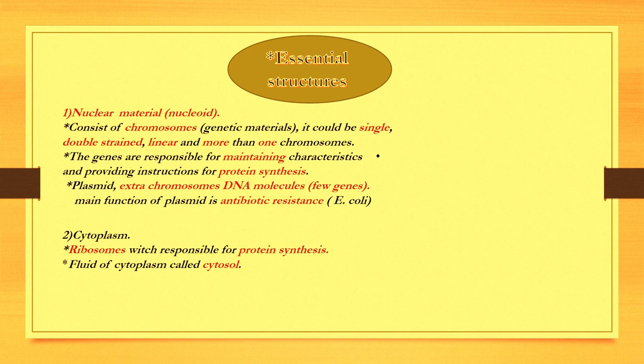Second, cytoplasm. The fluid in the cytoplasm is called cytosol. The ribosome in the cytoplasm of the bacteria consists of 70S. The S means Svedberg, which is the unit of measurement of ribosome. It consists of the large subunit, which is equivalent to 50S, and the small subunit equal to 30S.